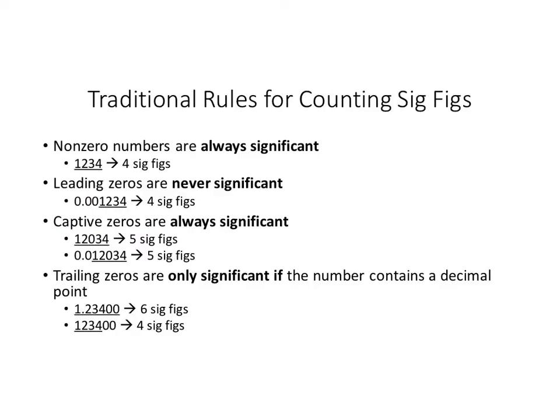There are two ways to look at how to count sig figs — I'm going to show you both. The traditional way is basically a list of rules. The first rule: any non-zero number is significant. So in this case, I've got 1, 2, 3, 4 — none of them are zeros, so that's four sig figs. They're all significant.